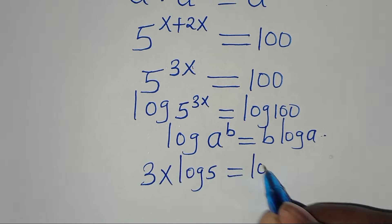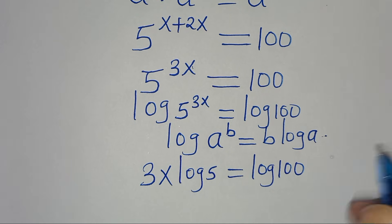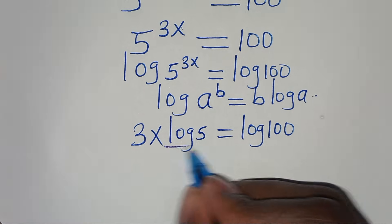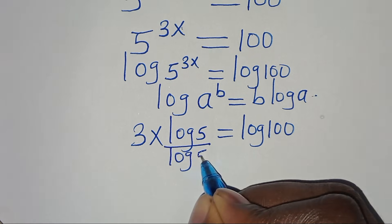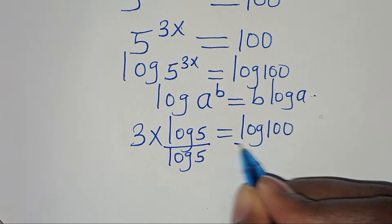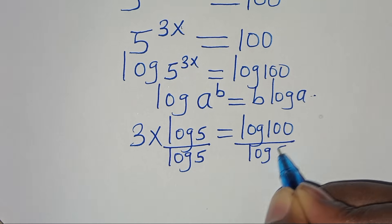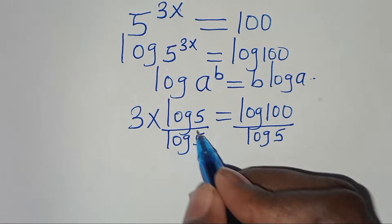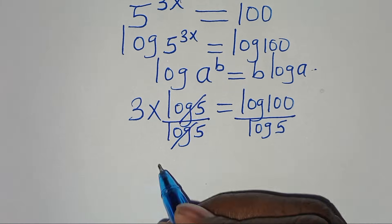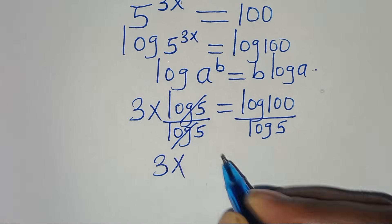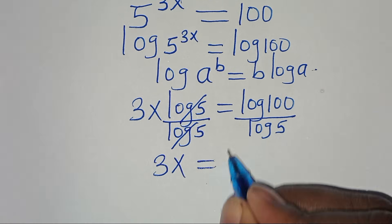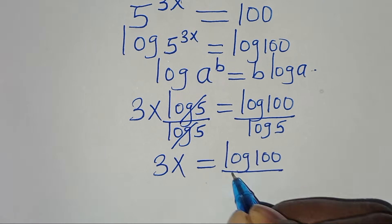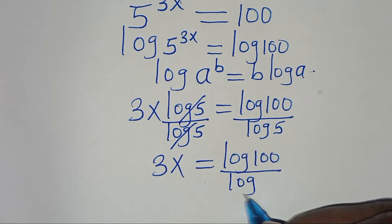Applying the power property, log(5^(3x)) becomes 3x·log(5), which equals log(100). Now we divide both sides by log(5), and log(5) simplifies, so 3x = log(100) / log(5).